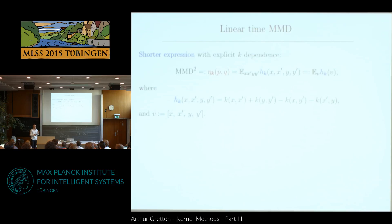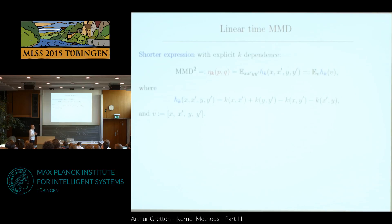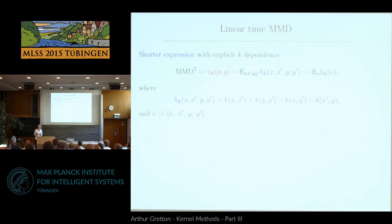I'll give more concise notation. I'll write the MMD as an average over four variables — two Xs and two Ys — of this H. H is the within-X similarity plus within-Y similarity minus the cross X-Y similarities. I put a subscript K on my H's to keep track of which kernel I'm using, since we're going to learn how to choose a kernel. I write my MMD as the sum of M/2 terms which are H_K(V_i), where V_i are the pairs (X_{2i-1}, X_{2i}, Y_{2i-1}, Y_{2i}), and there are M/2 such terms.